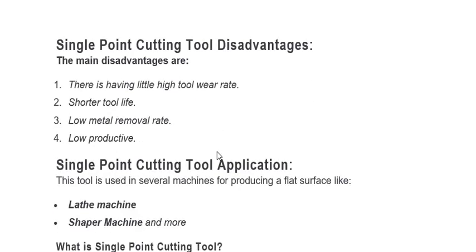Disadvantages of a single point cutting tool: tool wear rate is high, shorter tool life, low metal removal rate, and low productivity. Since there is only one point in direct contact with the workpiece, the tool wear rate is high and tool life is shorter. Because material is removed by a single point, the material removal rate and productivity are also low.